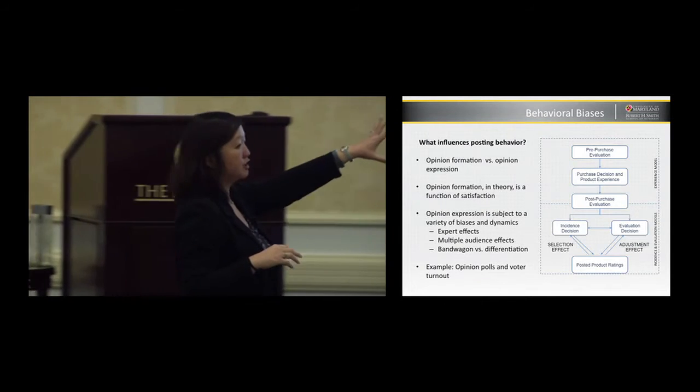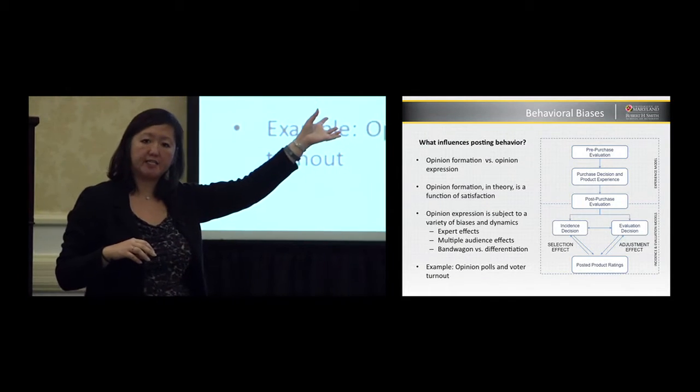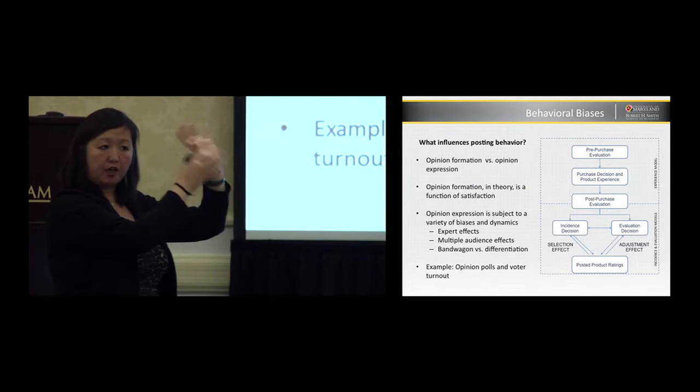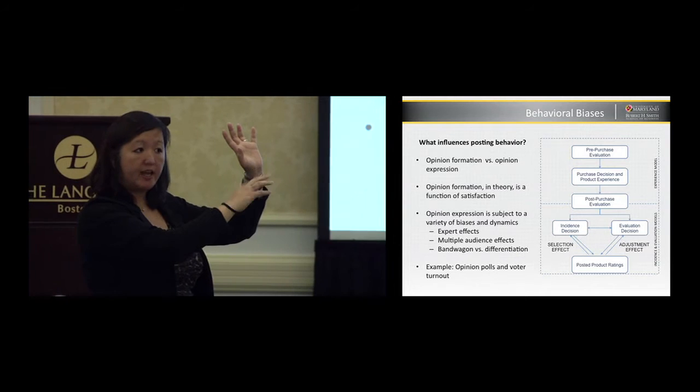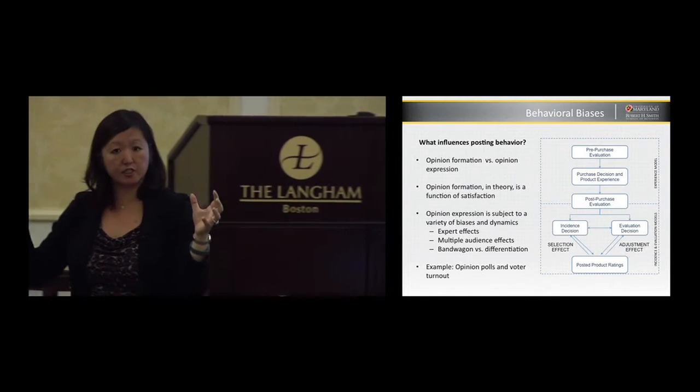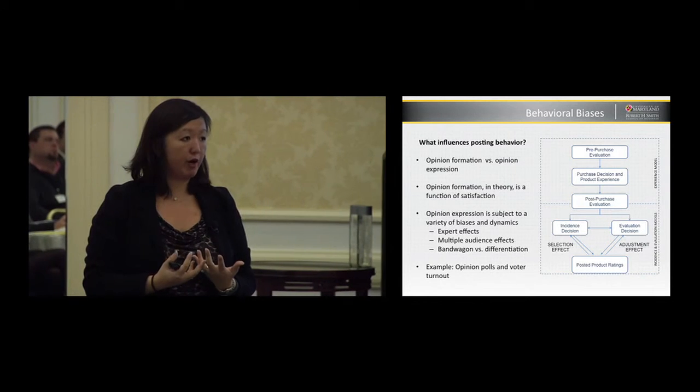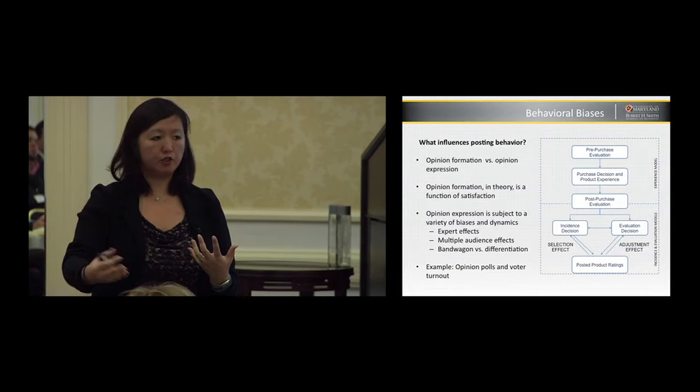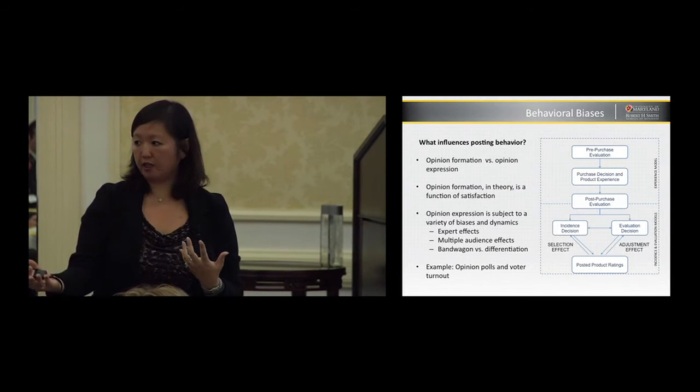This is a framework that was proposed by a political scientist named Browinski, where you have an opinion, an underlying opinion formation process, followed by a formation expression process. And there are two distinct stages. So you can have an opinion about issues, about products. But that's not necessarily what you express to your friends, to your family, to your social media community.